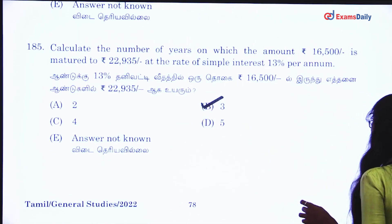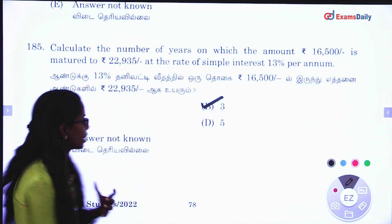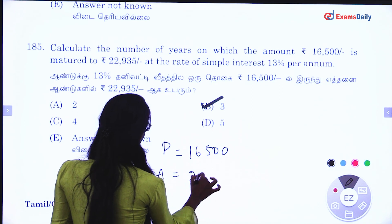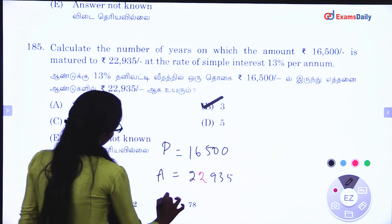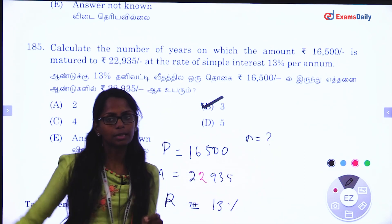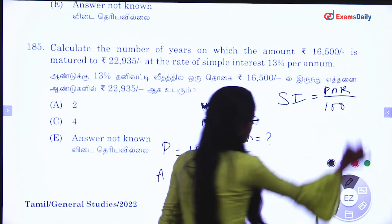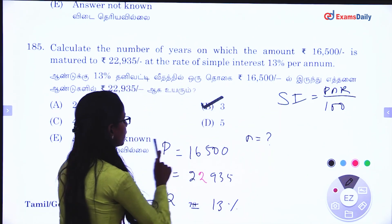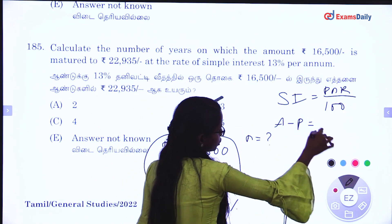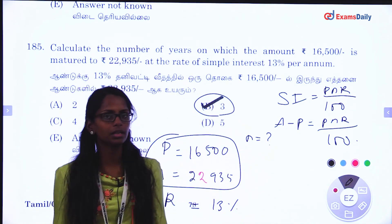Calculate the number of years on which the amount 16,500 matures. Principal amount is 16,500, amount is 22,935, rate of interest is 13%. It is simple interest. The formula is: Simple Interest = PNR divided by 100. Amount minus Principal equals PNR by 100. Substitute and the answer is 3 years.